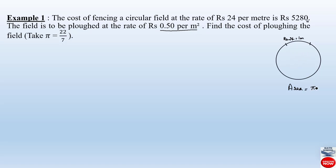The area of a circular field is given by pi r squared. To find out the area we need the radius of the circle. But in the question, the area is not directly mentioned, so first we have to find the radius. We will use the information given in the first line of the question to find the radius of this circular field.